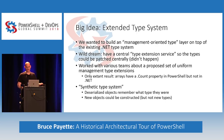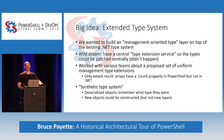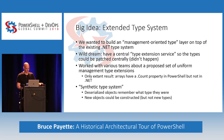Big idea: the extended type system. We wanted to build a management-oriented type system layered on top of the existing .NET type system. We had a wild dream of a central type extension system where you'd be able to publish patches to the type system of running code. It was very cool — it didn't happen. We worked with a variety of teams and many people thought this was a good idea, but ultimately it got lost in schedules. As near as I can remember, the only actual result is that arrays have a dot-count property in PowerShell, which they don't in .NET.